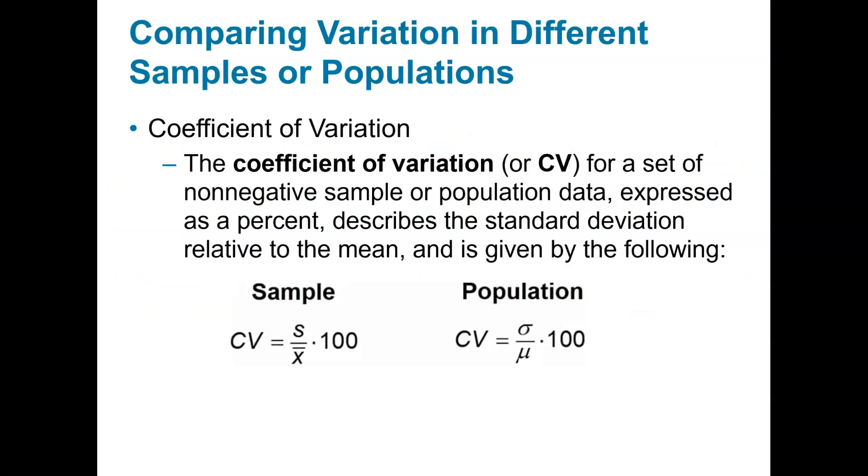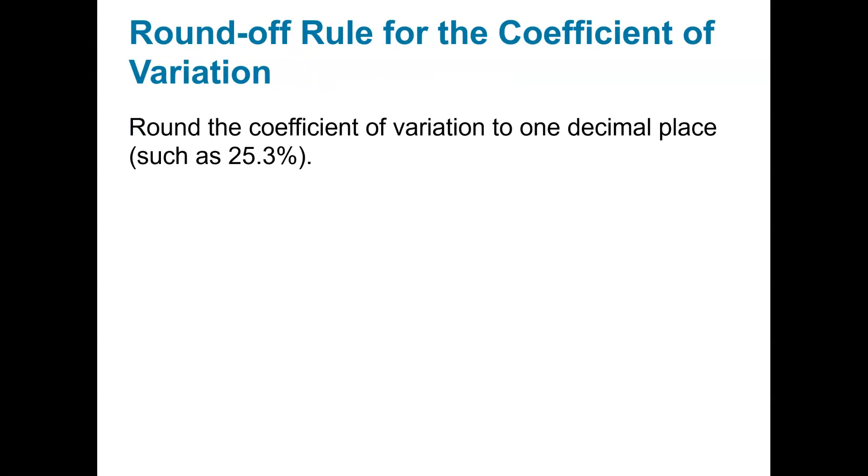Now, going back to variation, so taking this beyond the basics here is comparing it in different samples or populations. There's a coefficient of variation, and this is the formula for determining it. And basically, it describes the standard deviation relative to the mean, and this is how you figure it out. So you take the standard deviation, you divide by the mean, and then to express it as a percent, you multiply by 100. And we often round the coefficient of variation to one decimal place.